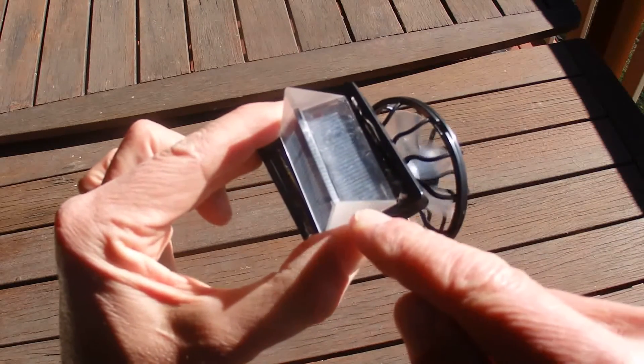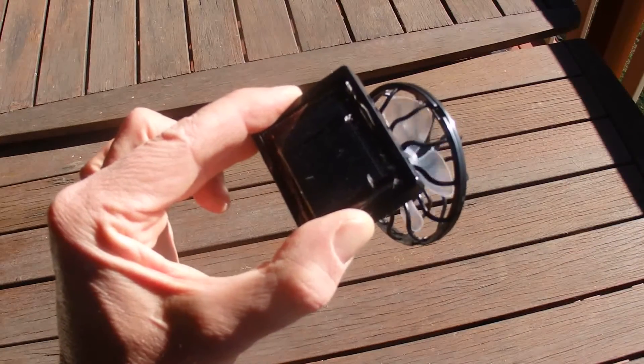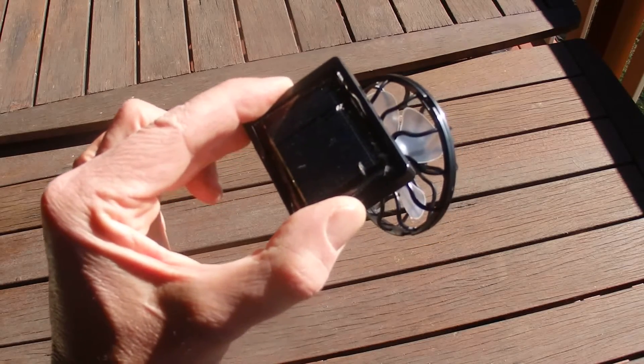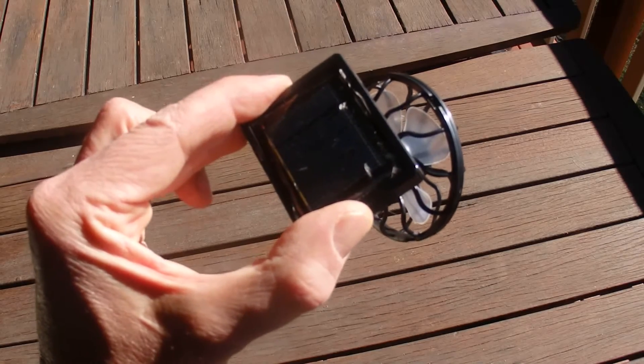You take it off and the fan stops spinning. There we go, that demonstrates that a prism bends light.